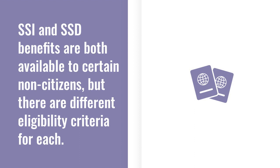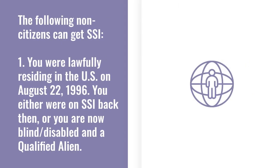Let's discuss SSI for non-citizens. There are different types of qualified non-citizens who can get SSI, and this determination usually depends on your legal immigration status. You can get SSI if you are a non-citizen and meet one of the following: Number one, you were lawfully residing in the US on August 22, 1996, and either you were on SSI back then, or you are now blind or disabled and a qualified alien.